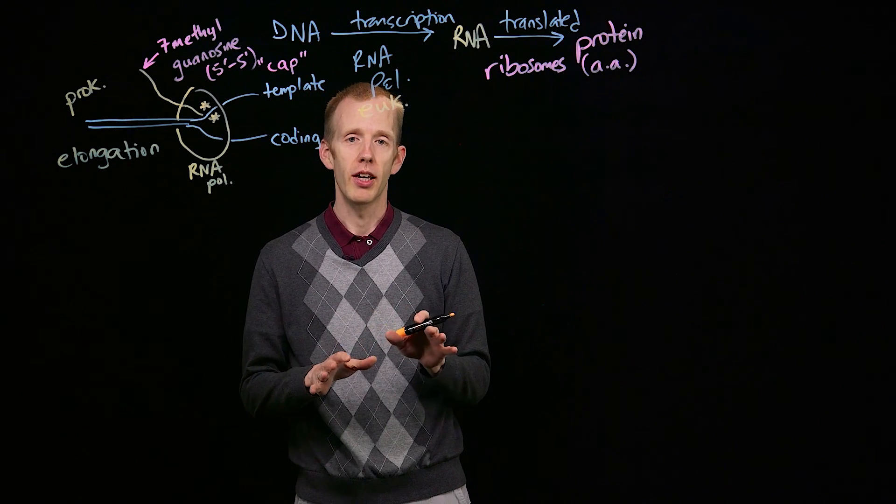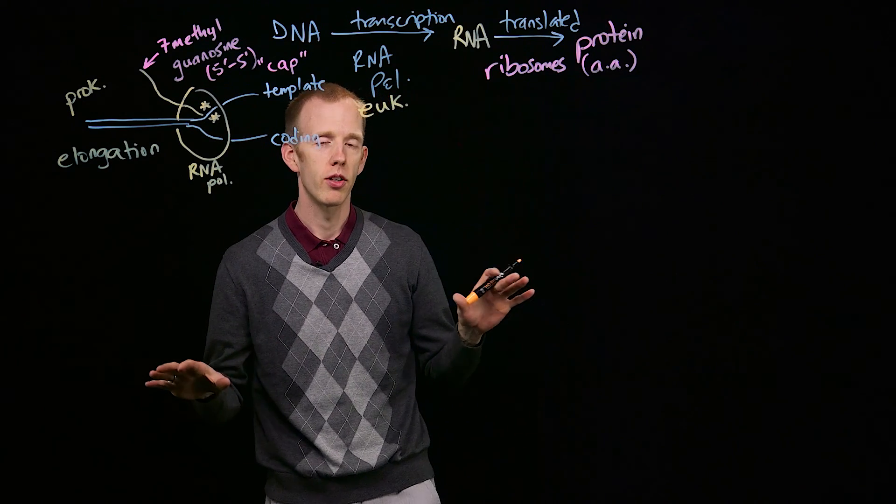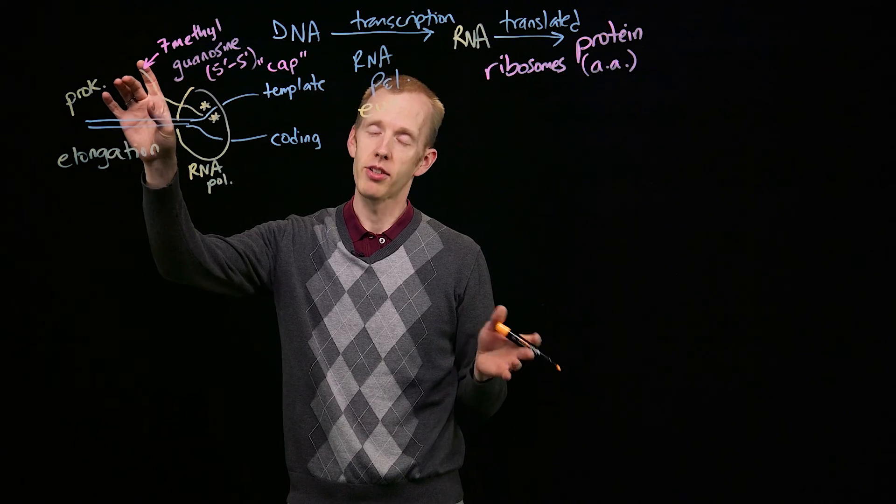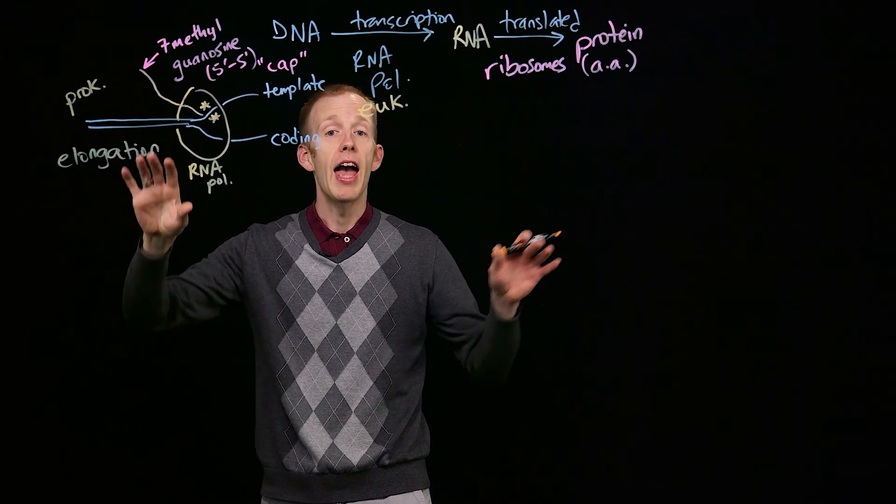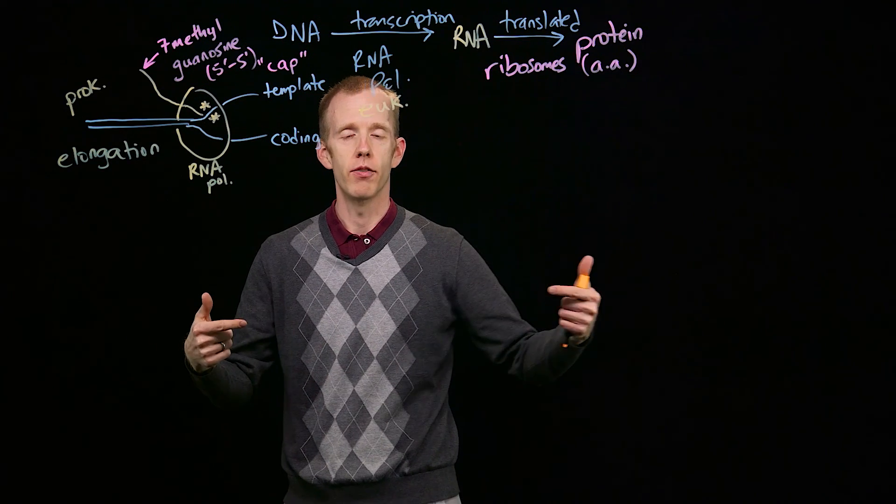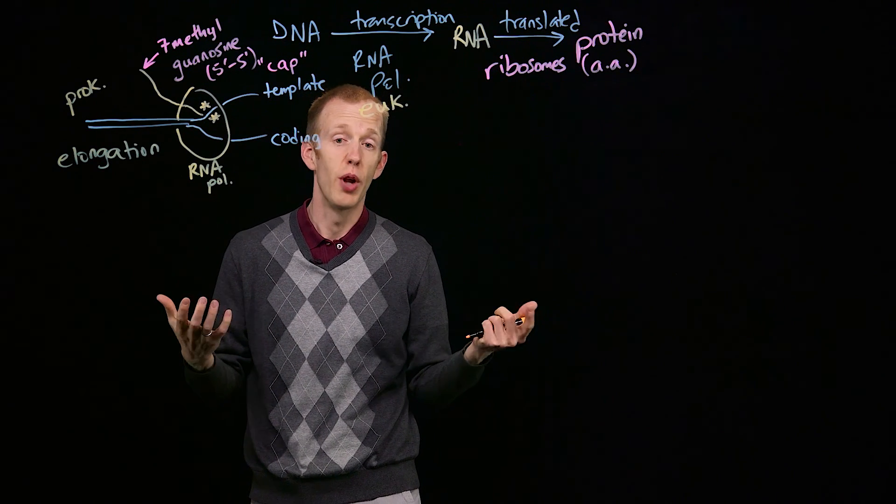By the way, both of those again are important for the stability of the messenger RNA molecule. The 5' 7-methylguanine cap, guanosine cap, and the length of that 3' tail protect both ends of the transcript from being chewed up or degraded.